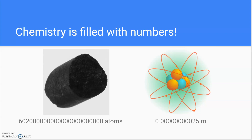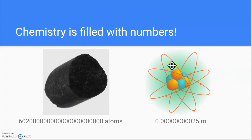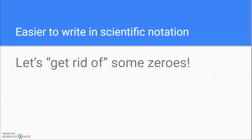Chemistry is filled with numbers. Let's take a look at this picture. This is a piece of carbon. Let's say this piece of carbon weighs 12 grams. If it does, this is how many atoms are present in that 12-gram sample. That's a big number — a lot of atoms. Here is a stylized picture of an atom, and this would be very, very small. If we measured the diameter in meters, this is what the diameter would be. Now that's a small number. Those numbers are hard to write because they have so many zeros.